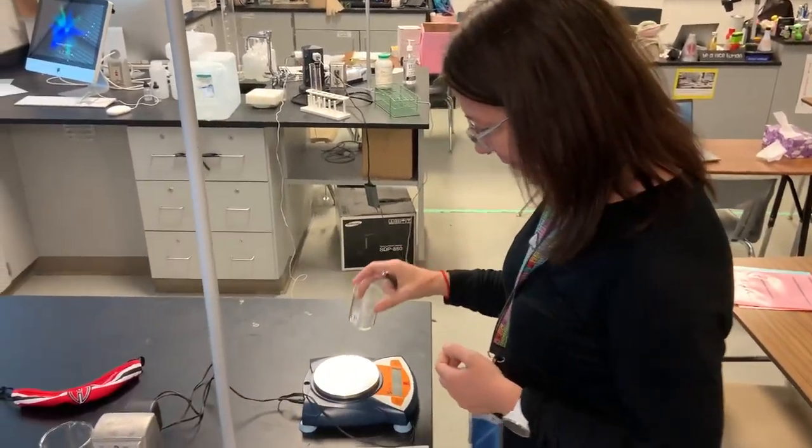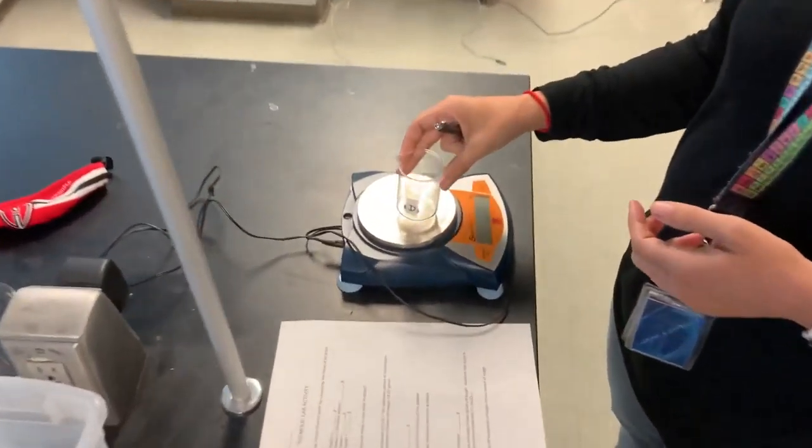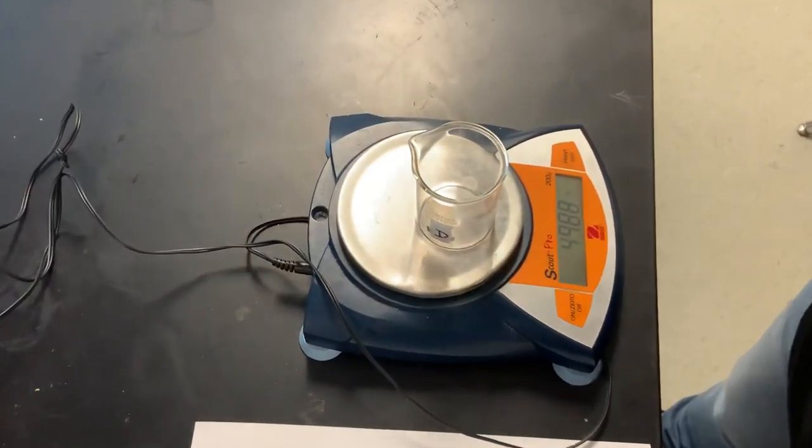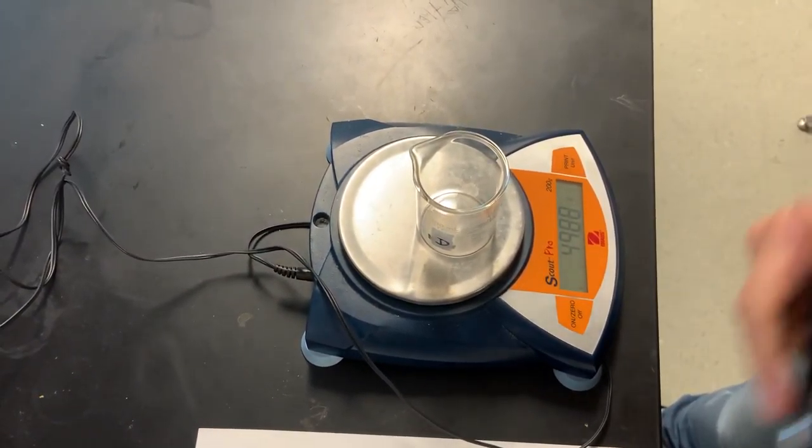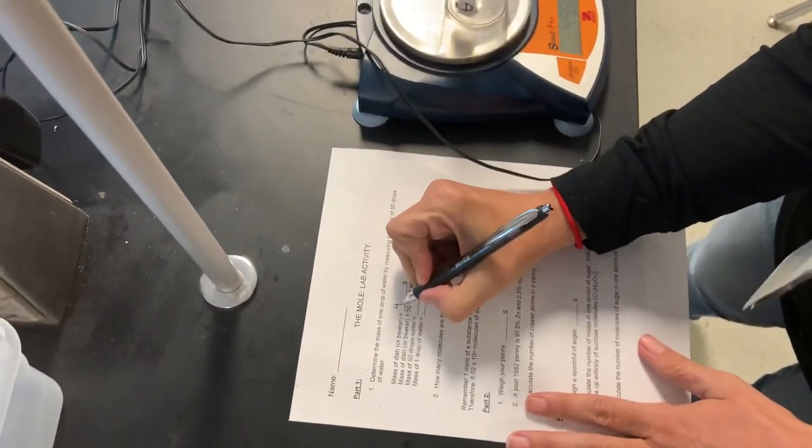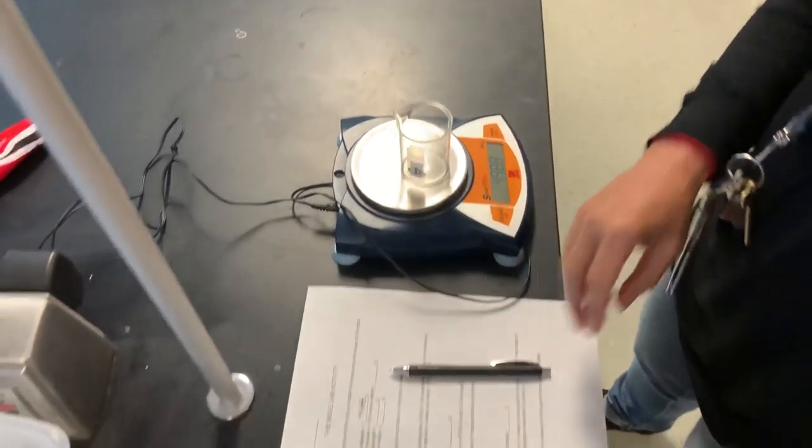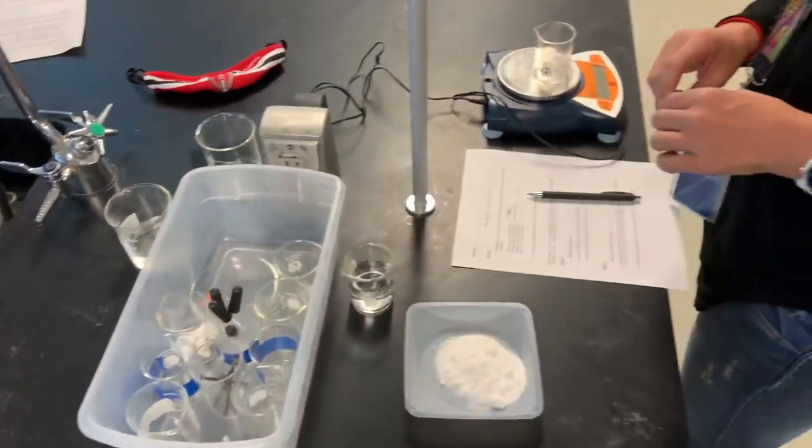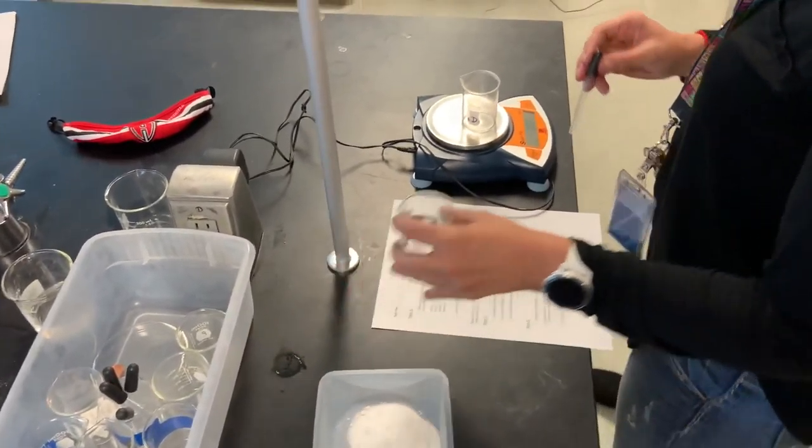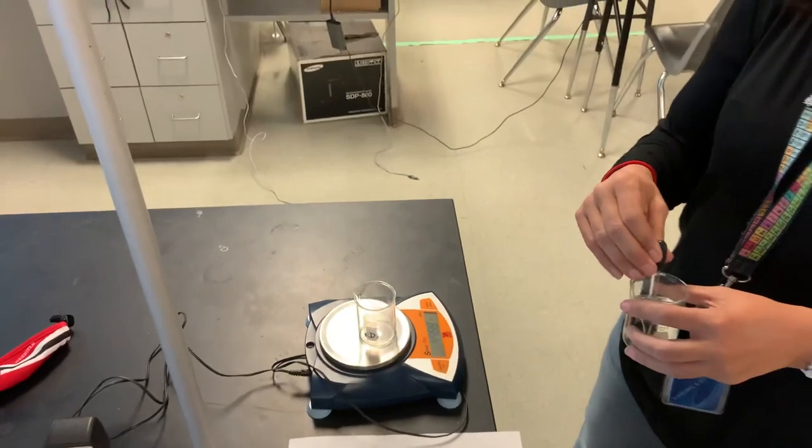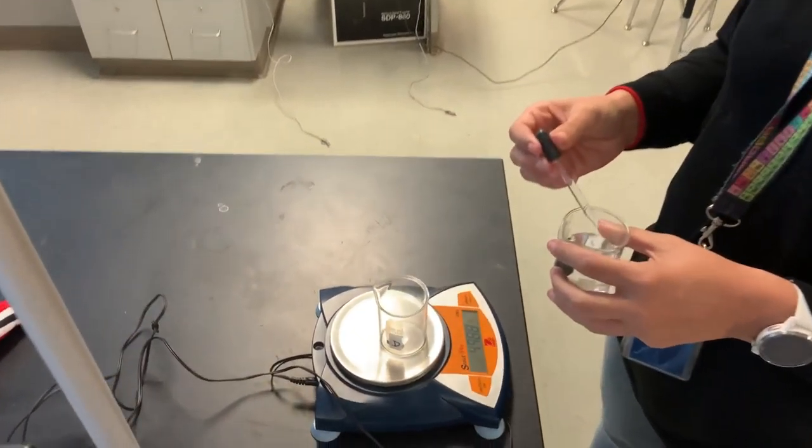Take the mass of the beaker first. The mass of the beaker is 49.88 grams. Then we're going to add to it 50 drops of water and we'll see what the mass is then.